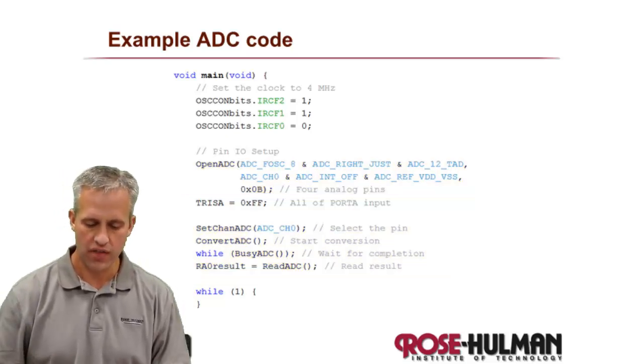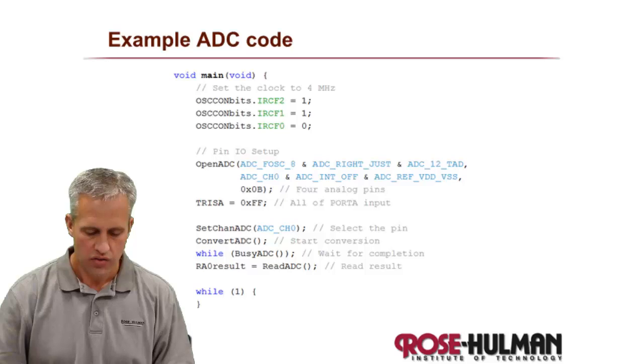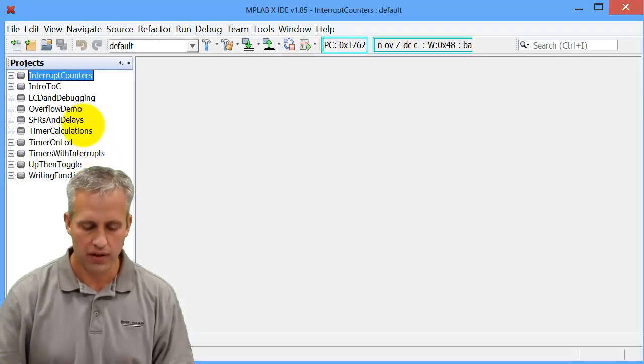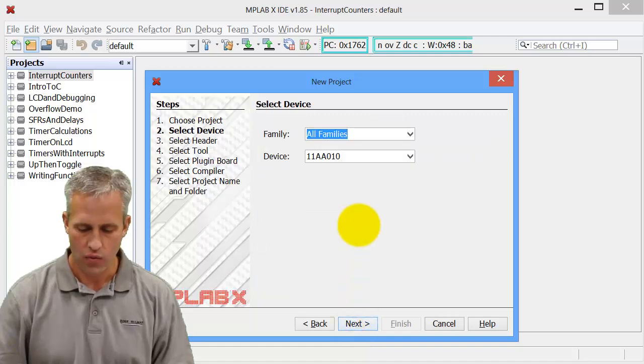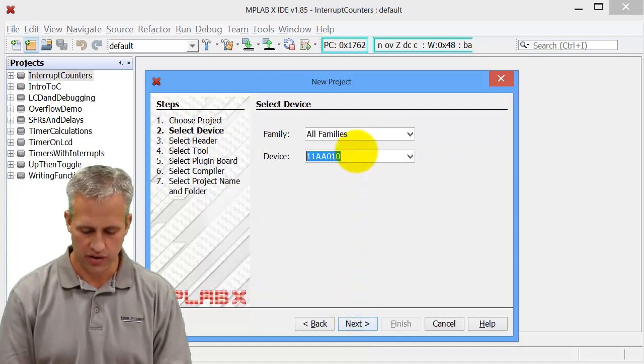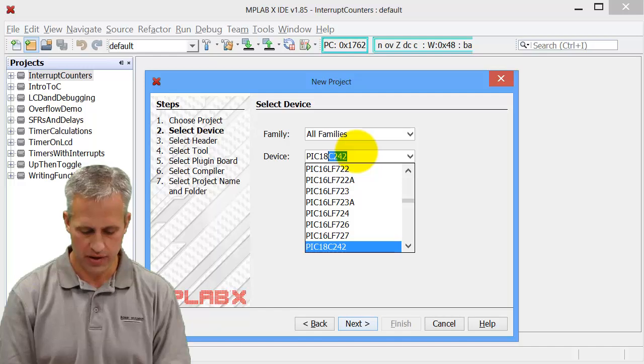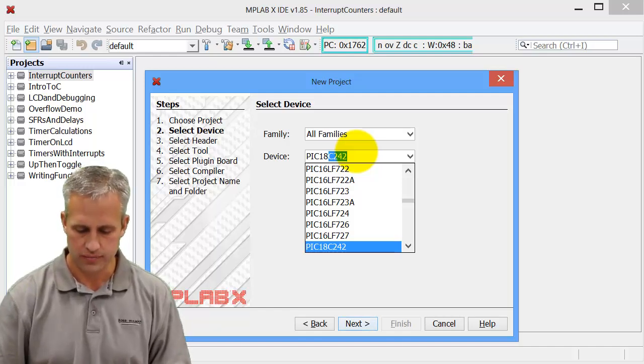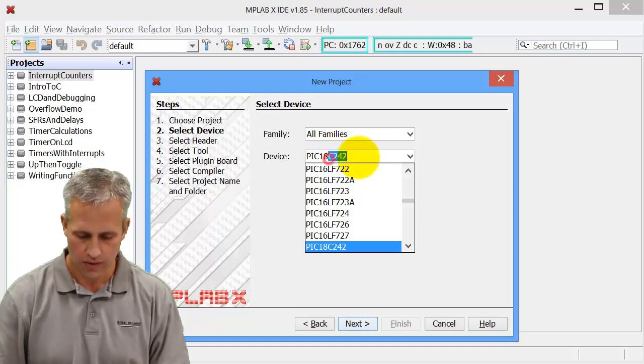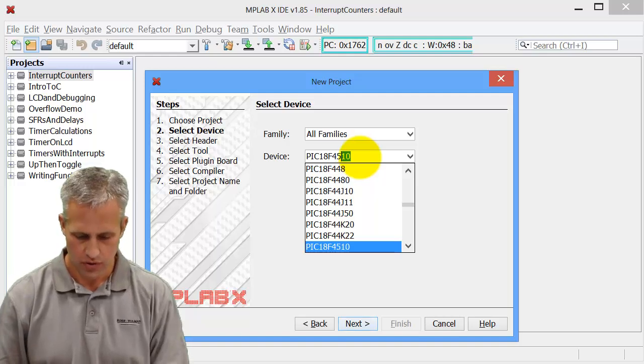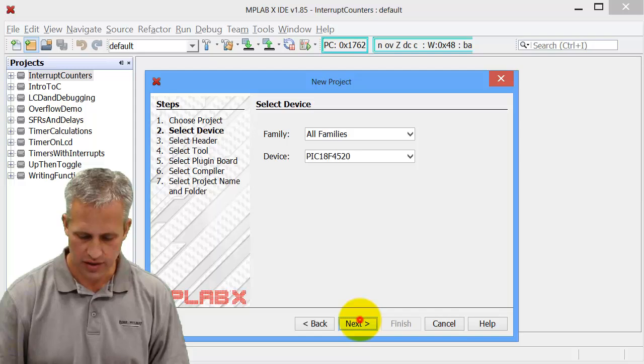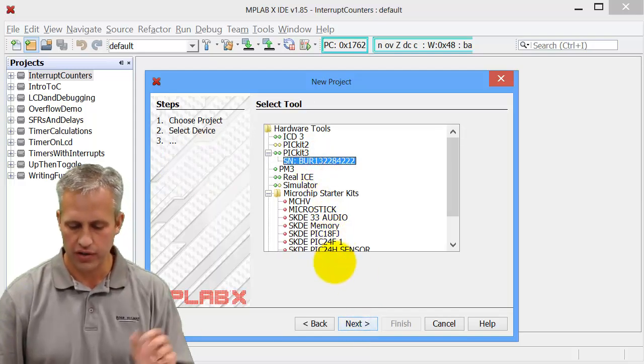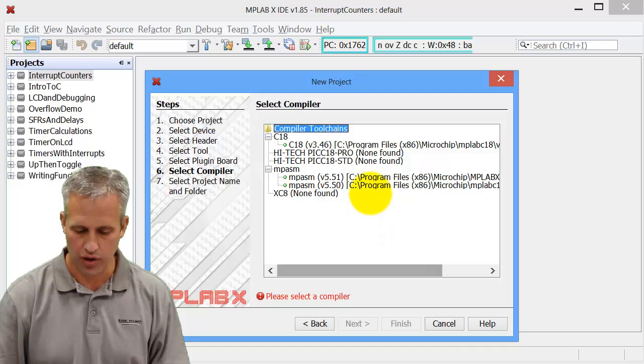Alright, so let's go ahead and do an example. I think it's the best way to learn. What we want to do is open up MPLAB, create a new project. We're going to make it a standalone project just like always. The PIC 18F4520.